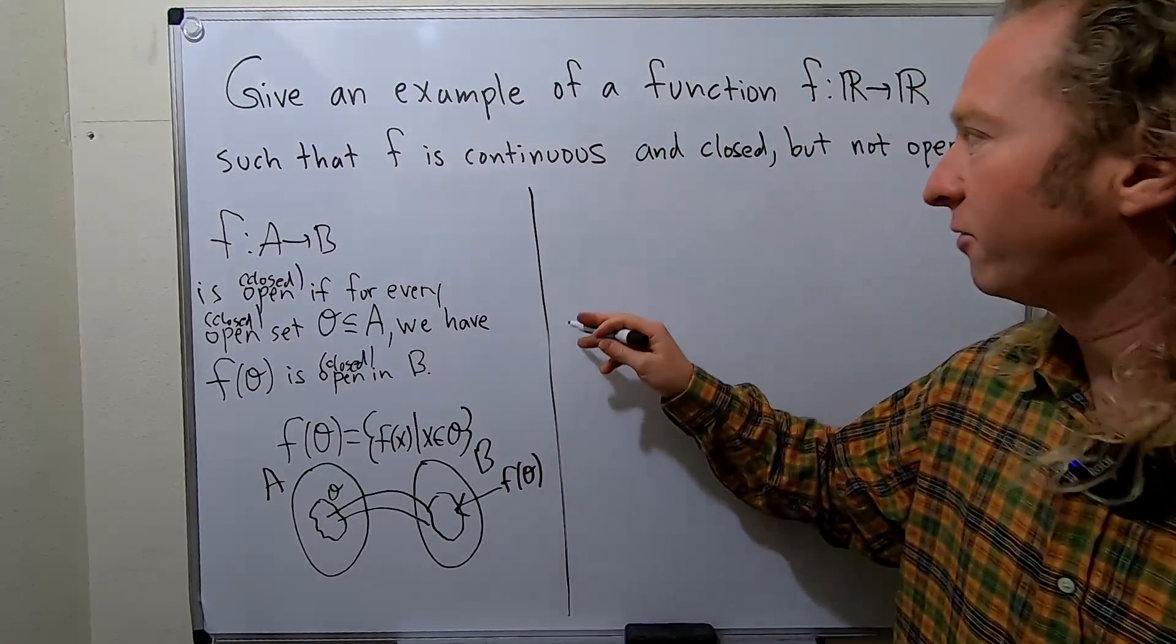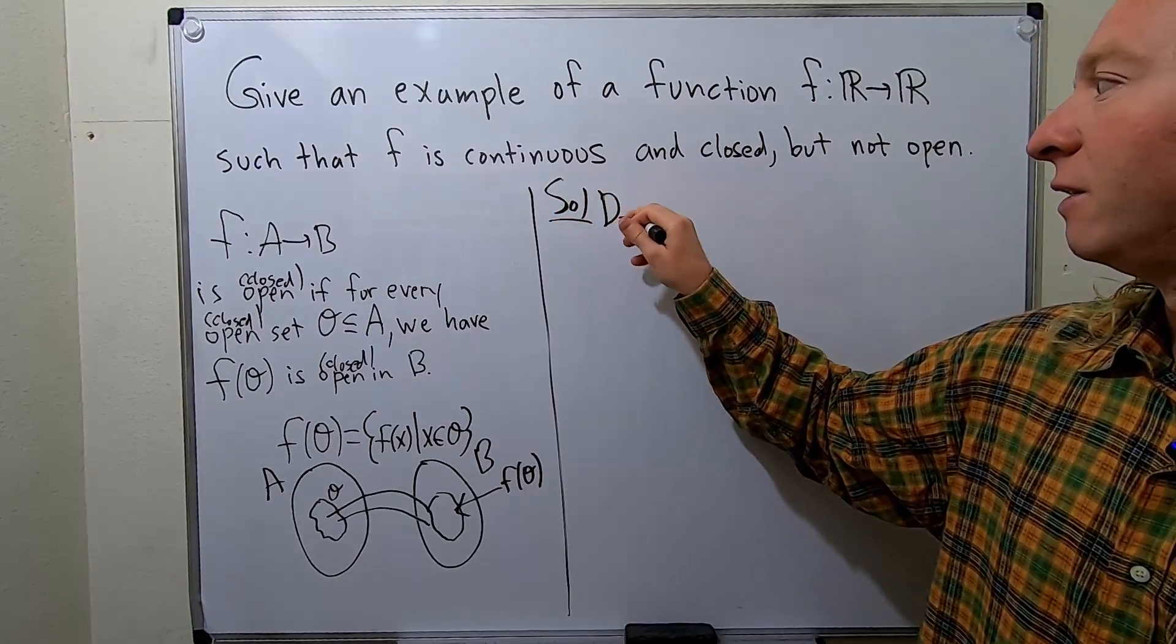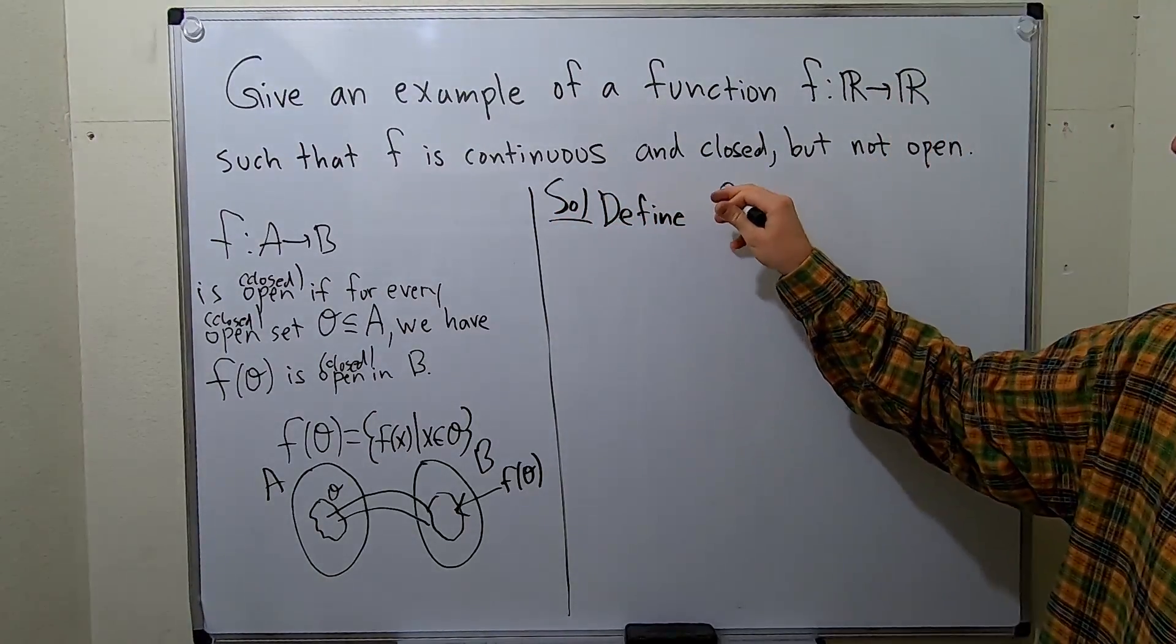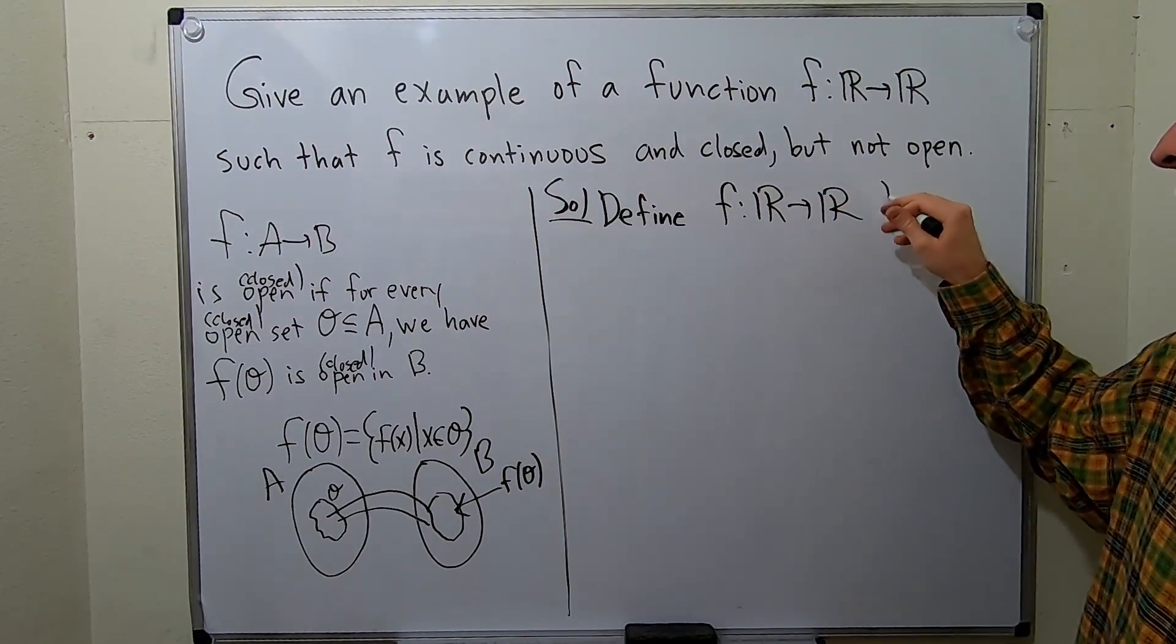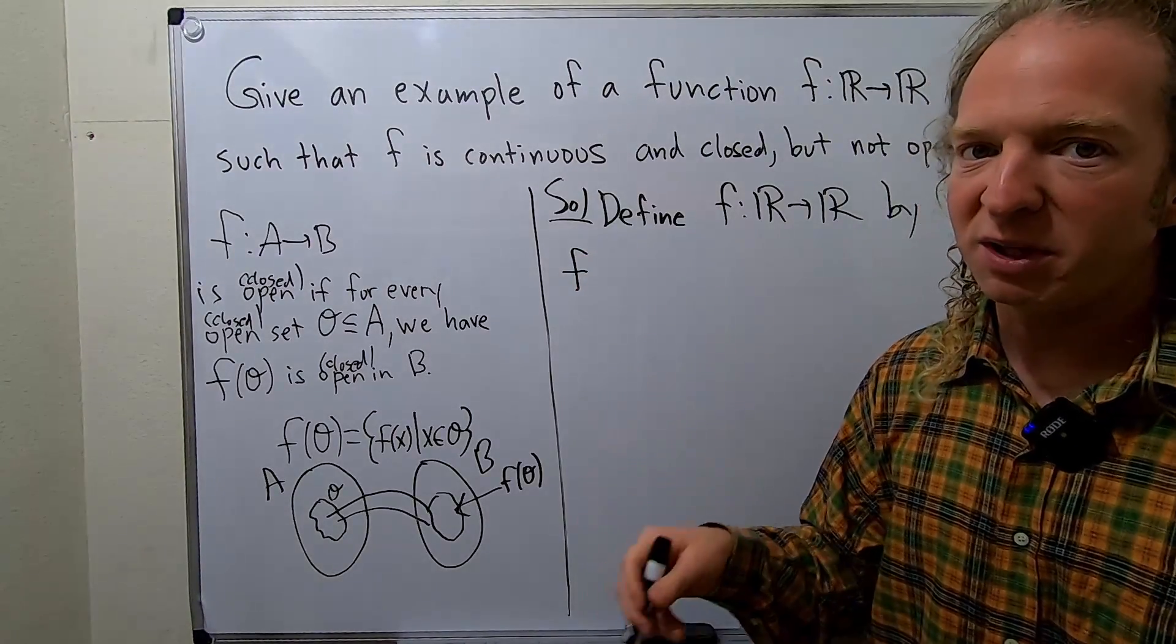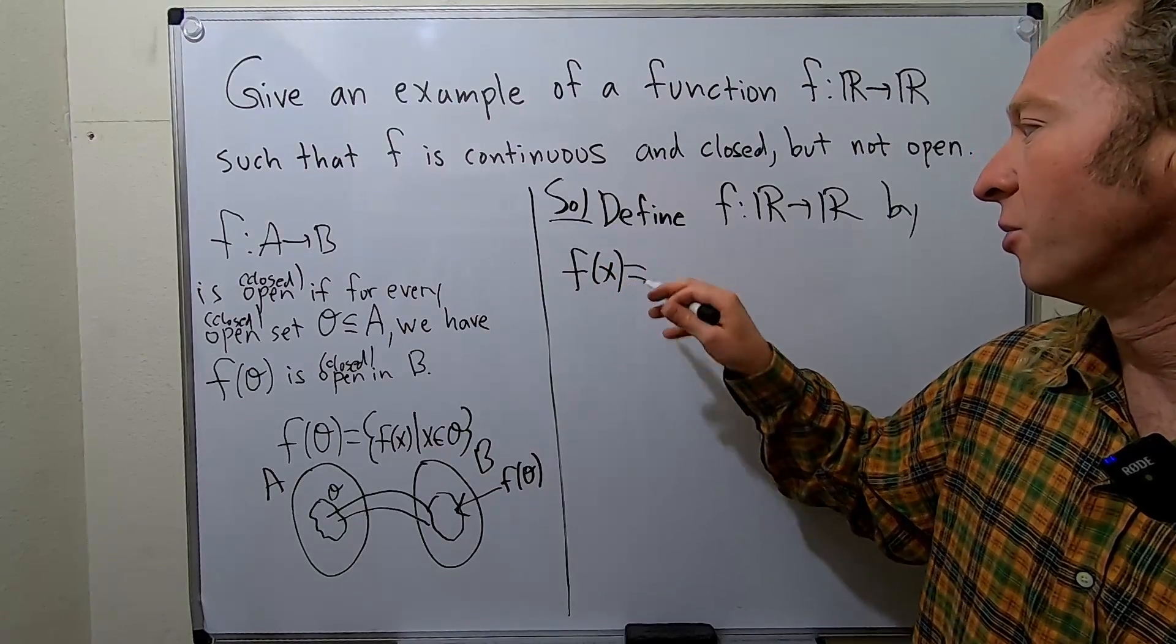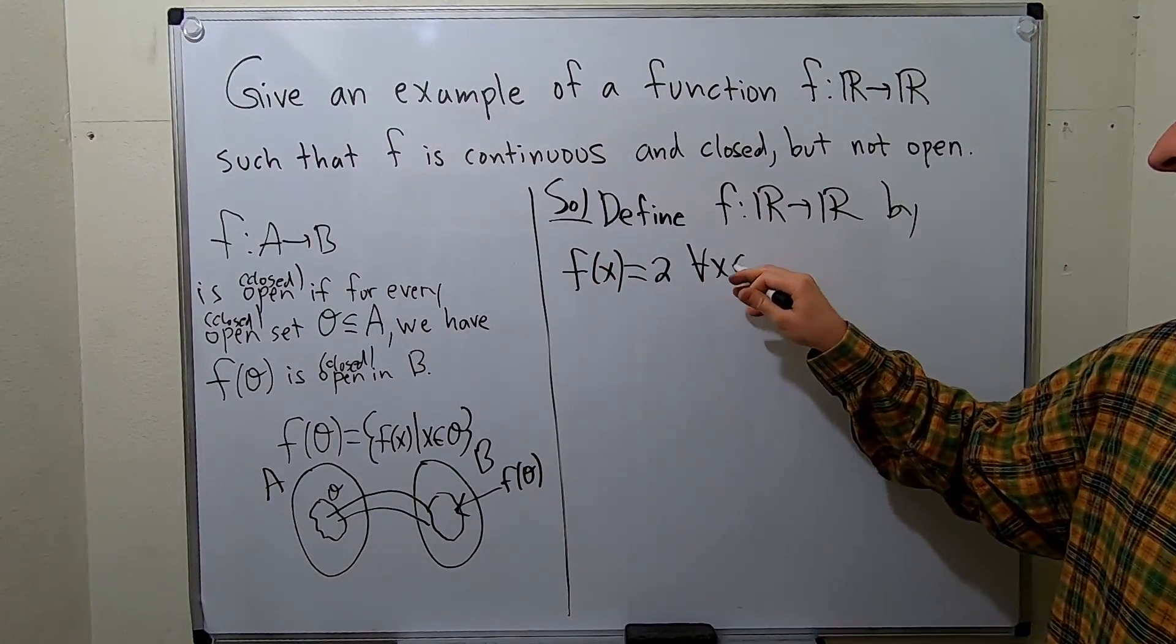So a simple example would be the following. So solution: we'll define—there's infinitely many solutions to this problem, this is just one example—f from the set of real numbers to the set of real numbers by, let's do a constant function because its direct image will just be a singleton set. So f(x) equals two for all x in R. So we're defining it this way.